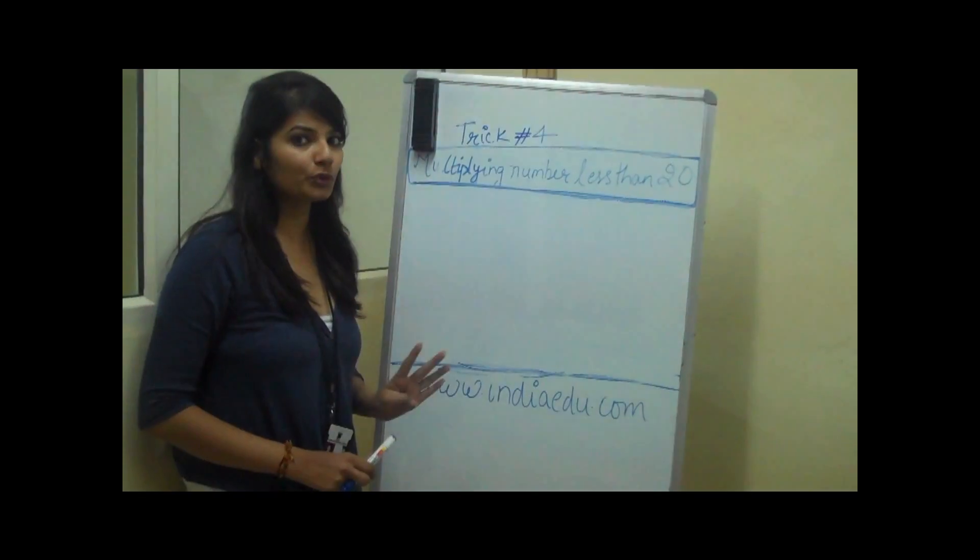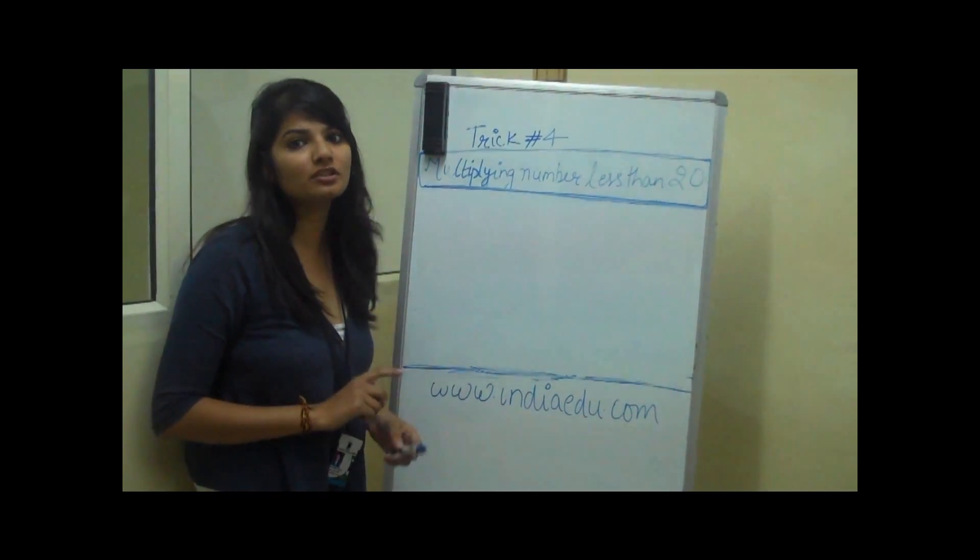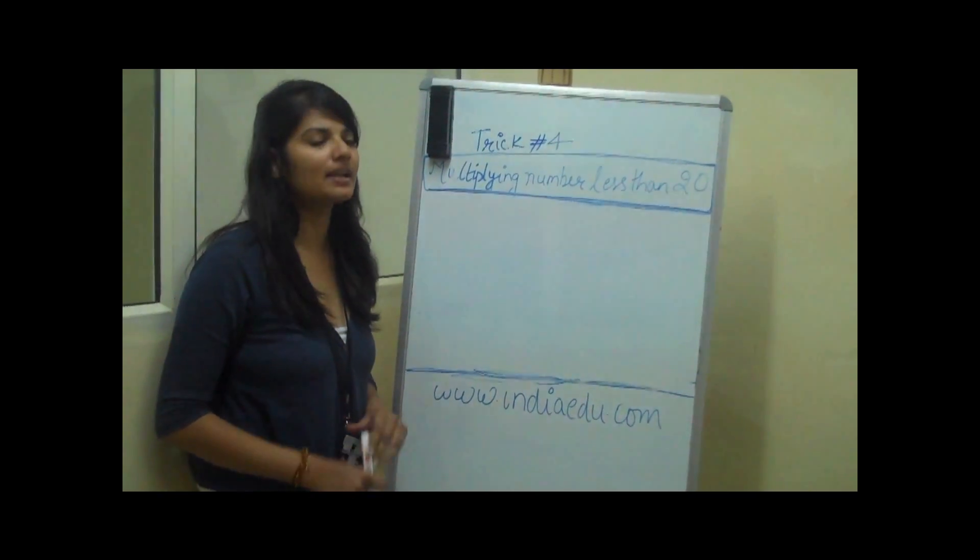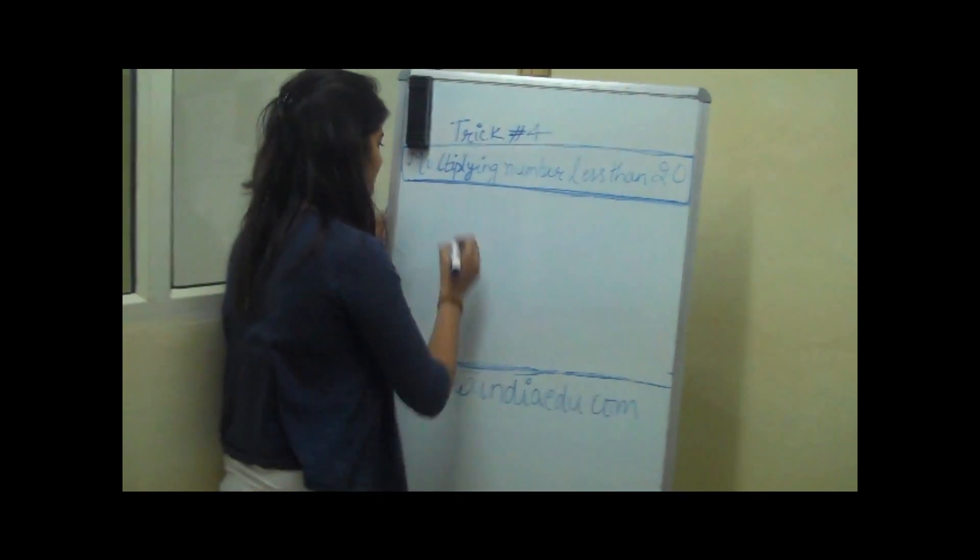Today we are going to talk about a trick in which we will multiply 2 digit numbers which are less than 20. Let's understand this concept first.